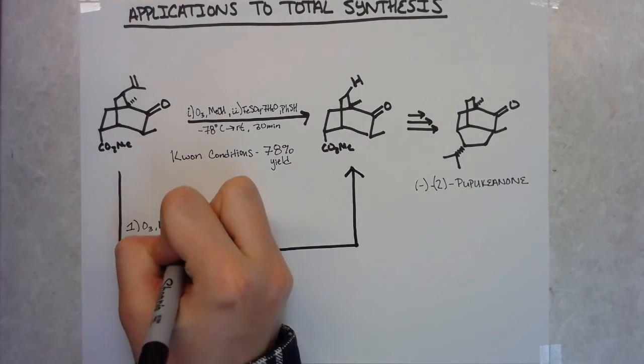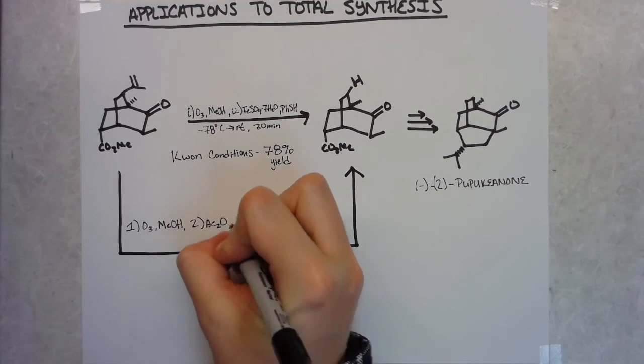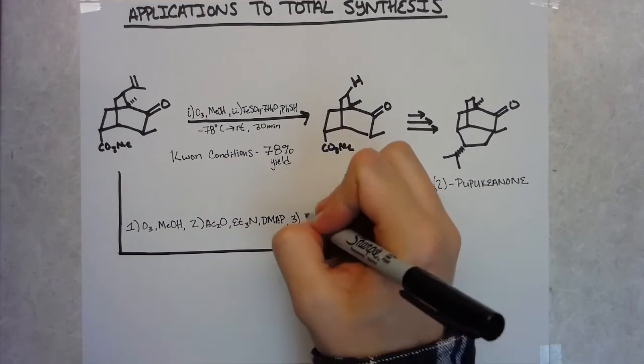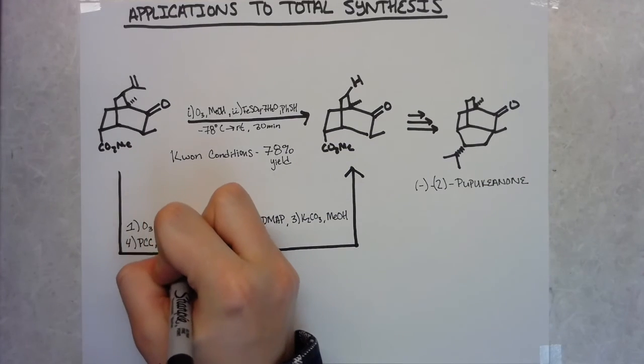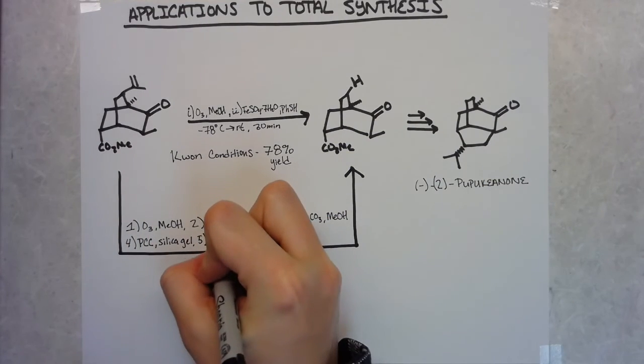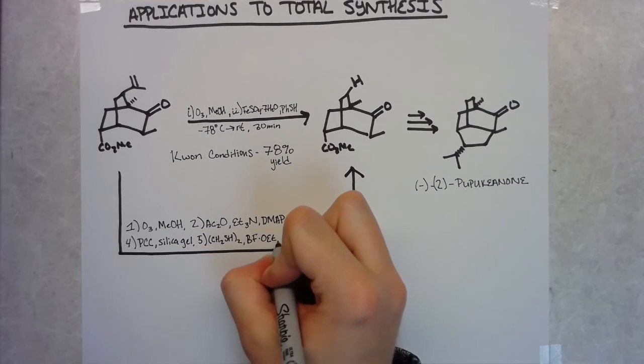And so that's one of and some of the other formal syntheses that they do the yields actually end up being slightly lower in some of them but you typically are saving at least two if not three or four steps as well as four or five purifications.